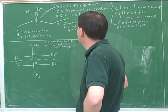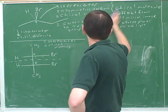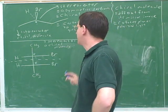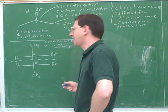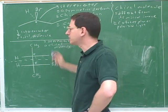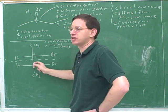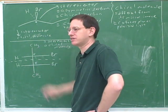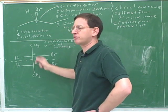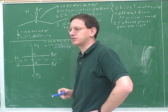What we've seen here is that chiral stereocenters can make a molecule chiral, but there are some exceptional cases where a molecule is achiral even though it has stereocenters. Basically, it's because the two stereocenters cancel each other out.